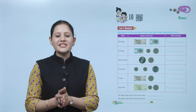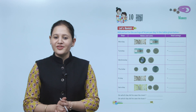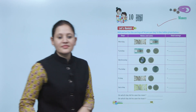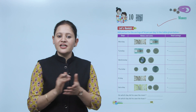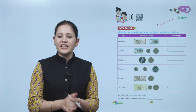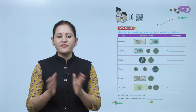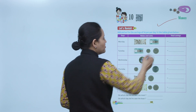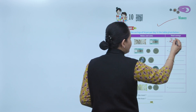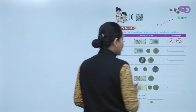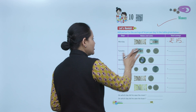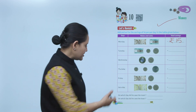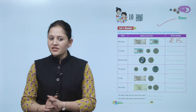Hello kids, welcome to today's maths class. Today we'll do money. Let's revisit: add and write the savings of RN per day in the table given below. On Monday, 10 plus 5 means he has saved 15 rupees on Monday. Like this, we'll count the money and write here and answer the given questions.